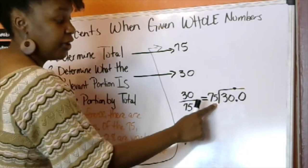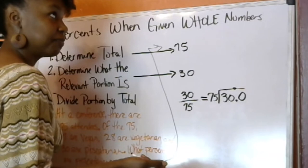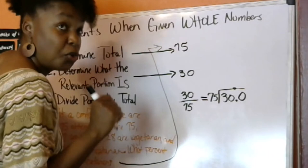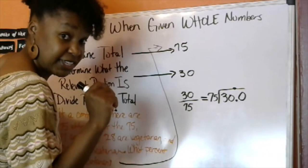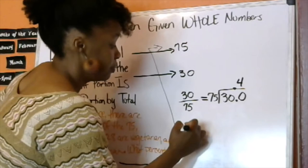So, we can't divide 30 by 75, but we can divide 300 by 75. And how many times does 75 go into 300? Let's see. 75 plus 75 is 150, that's two. 150 plus 150 is 300. So, that's four times. 75 goes in there four times.